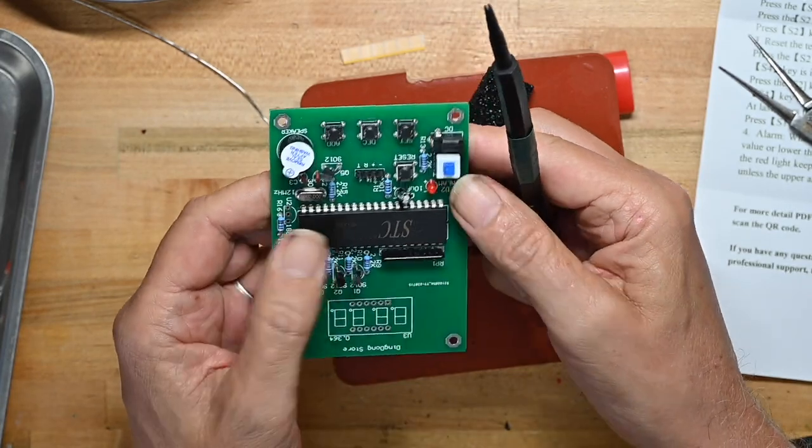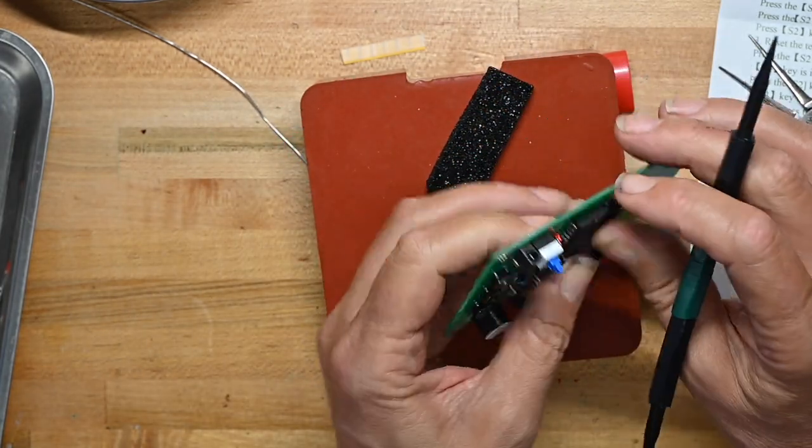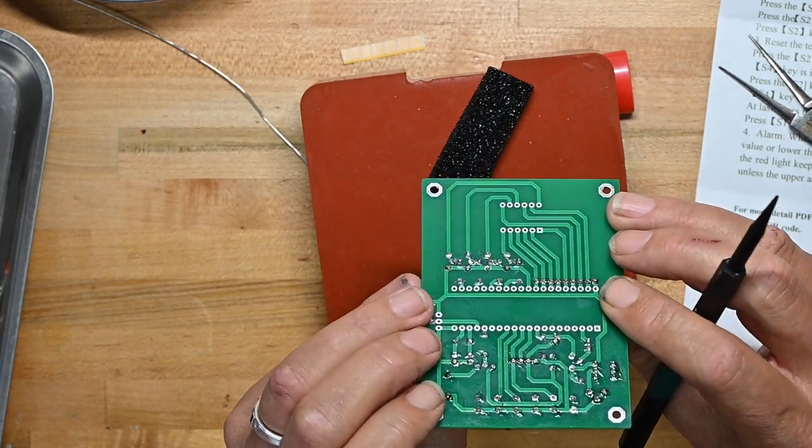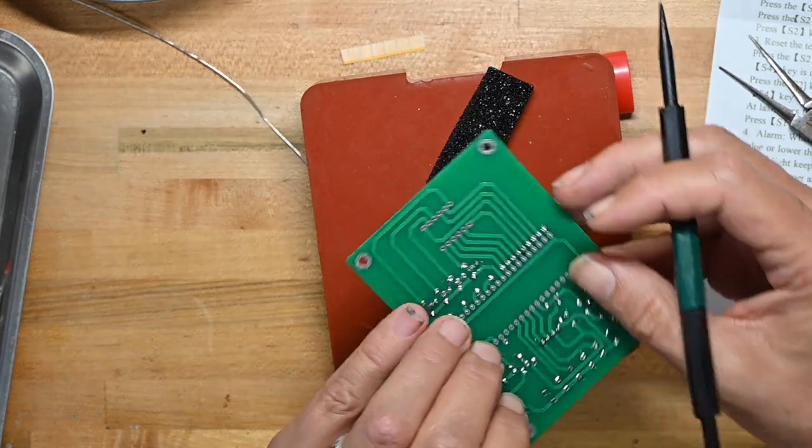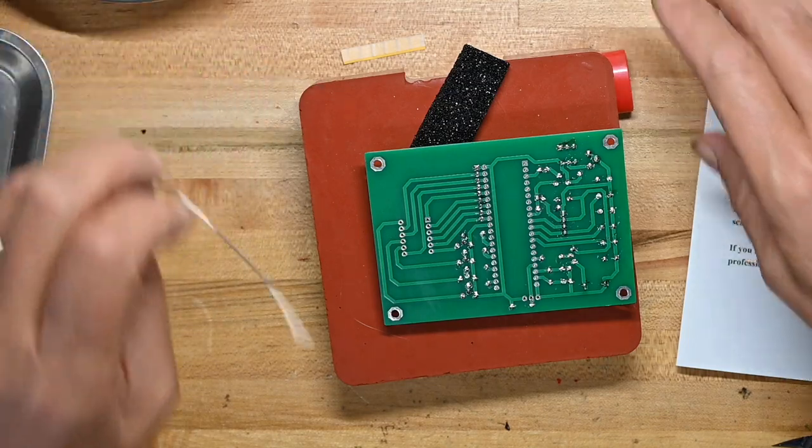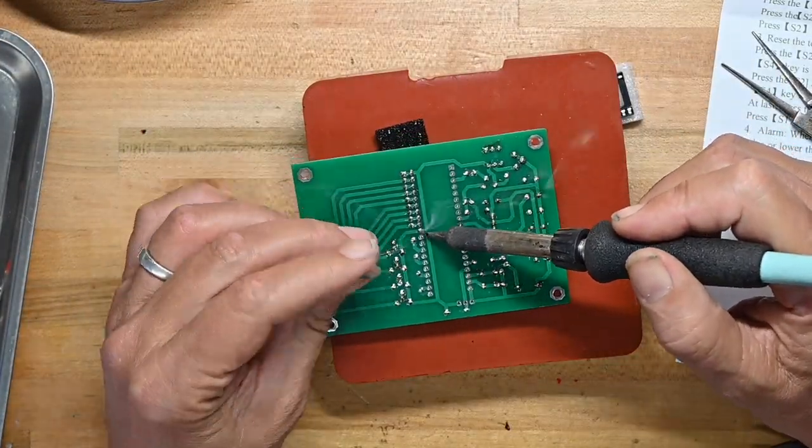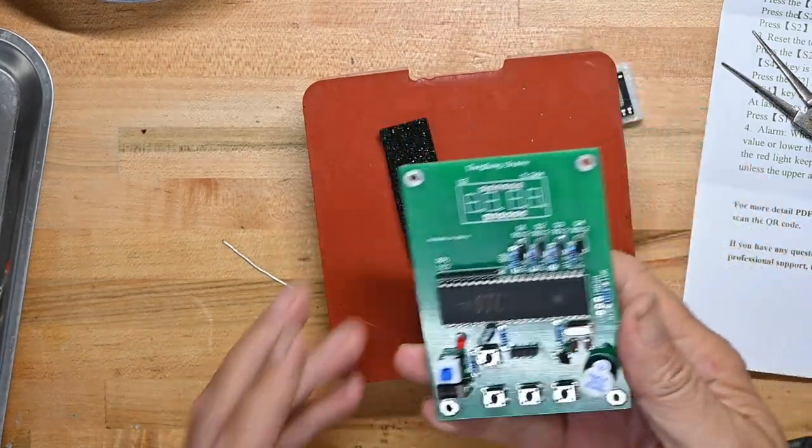There we go. And I'm verifying that the notch on the chip is by the notch on the printing. I'm also verifying all the pins went through. And they did. So solder all these pins up. That's the chip in place.